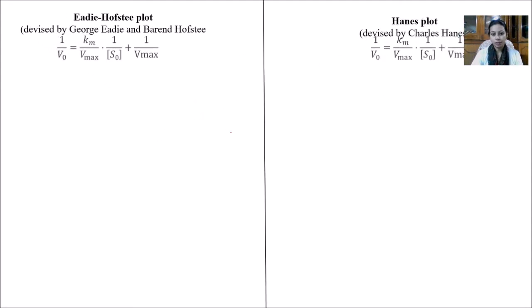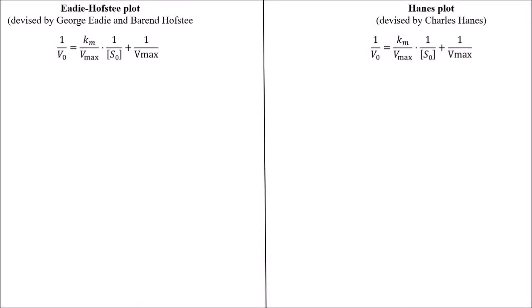When we will see this comparative study of Eadie-Hofstee plot and Hanes plot, both have used the initial formula used by the Lineweaver-Burk plot, which was the reciprocal of Michaelis-Menten constant equation. So what Eadie-Hofstee did, they have multiplied the whole equation with V0 into V max, whereas Hanes plot has multiplied the whole equation with S0.